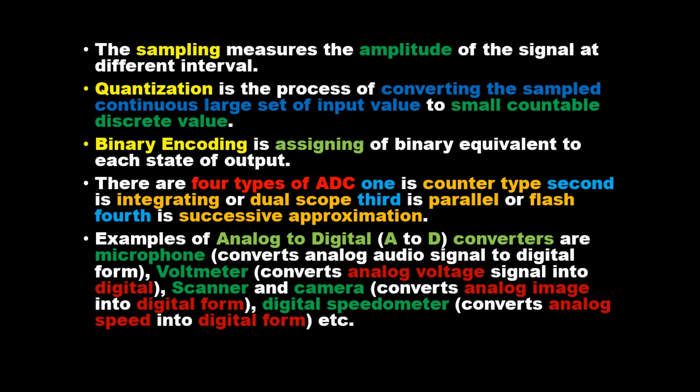Examples of analog to digital converters are microphone, which converts analog audio signal to digital form; voltmeter, which converts analog voltage signal into digital; scanner and camera, which convert analog image into digital form; and digital speedometer, which converts analog speed into digital form.